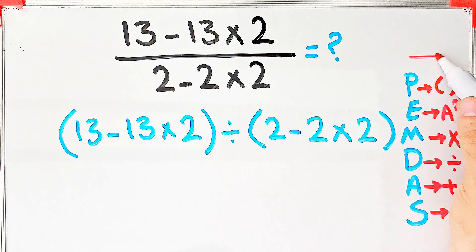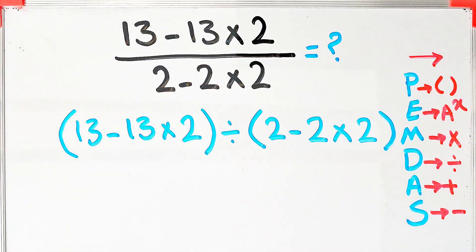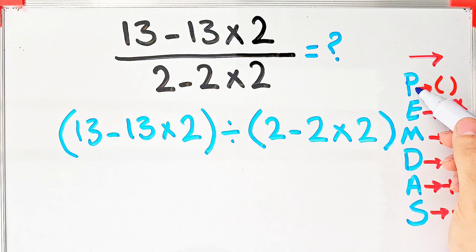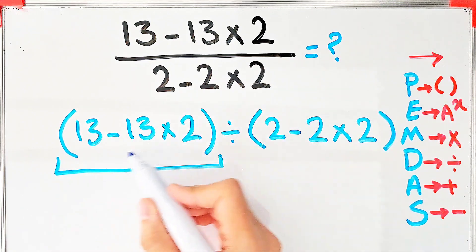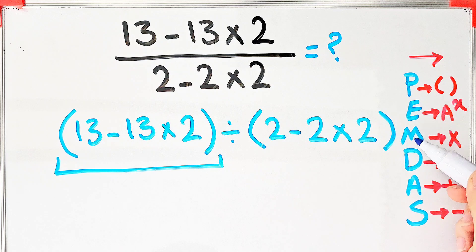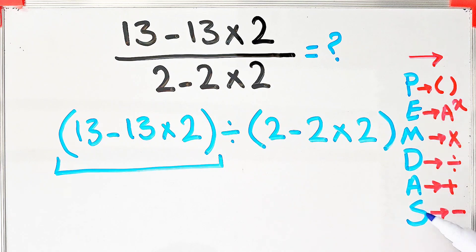When we have both, we start from the left and simplify. According to this rule, first we simplify the parentheses. Inside the first parentheses we have subtraction and multiplication. First we do multiplication because multiplication has higher priority than subtraction.